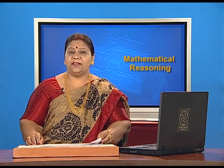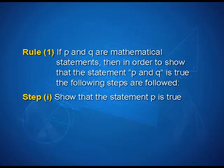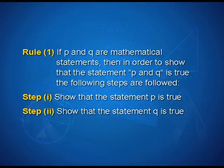Rule 1 says: if p and q are mathematical statements, then in order to show that the statement 'p and q' is true, the following steps are followed. Step 1: show that the statement p is true. Step 2: show that the statement q is true.